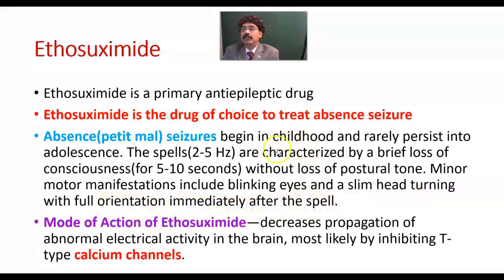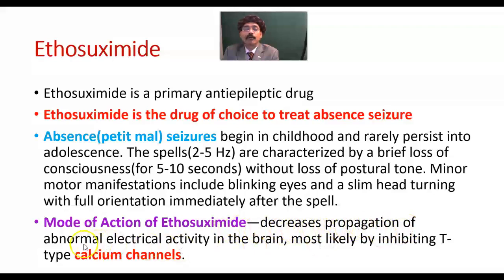Absence or petit mal seizure is a childhood disease. What is the mechanism of action of ethosuximide, the drug of choice for absence seizures? It decreases the propagation of abnormal electrical activity in the brain, most likely by inhibiting T-type calcium channels.